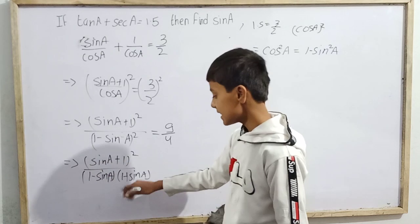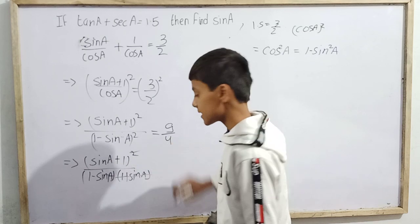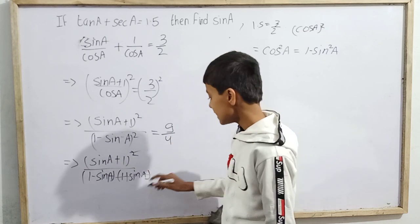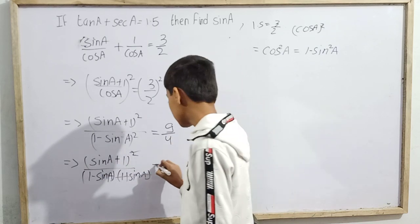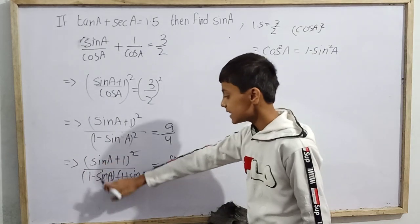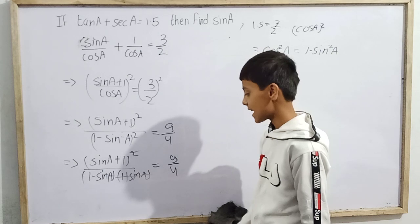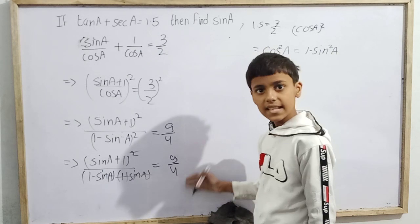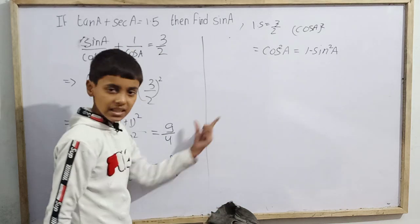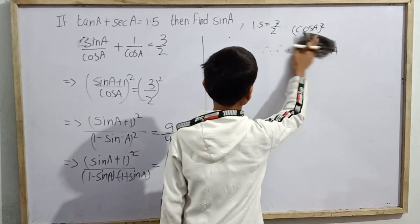Since (1 + sin(a)) appears in both the numerator as (sin(a) + 1) and in the factored denominator, we can cancel it. After cancellation, we are left with (sin(a) + 1) / (1 − sin(a)) = 9/4.